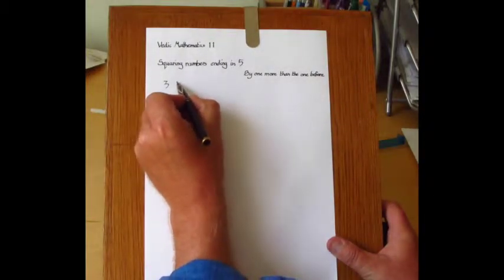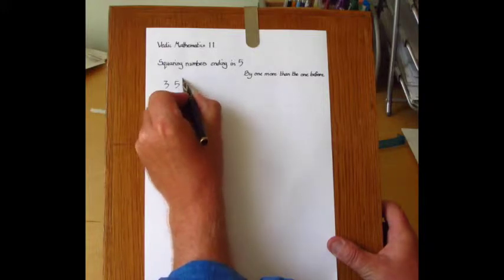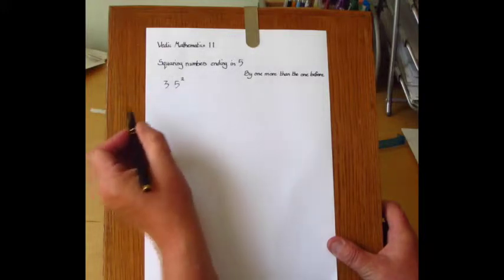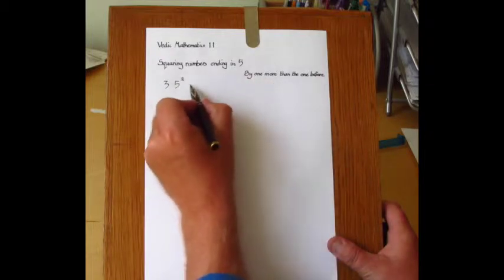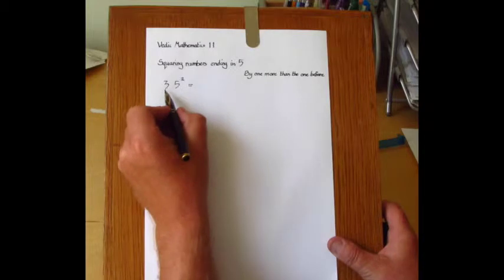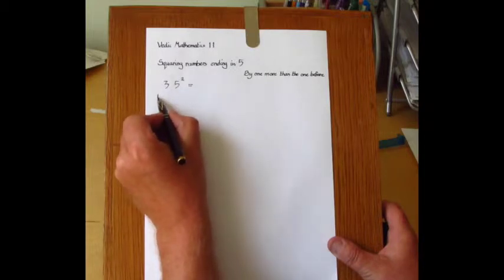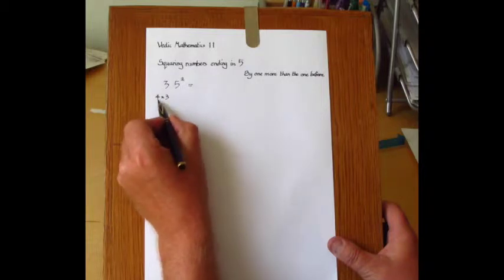It may seem quite a specialist thing but it's good fun, so I'll show you how to do it. Let's take 35 squared. This uses the rule or sutra 'by one more than the one before.' The one before is the three. So we take one more than that, which is four, and we multiply it by the three and write down